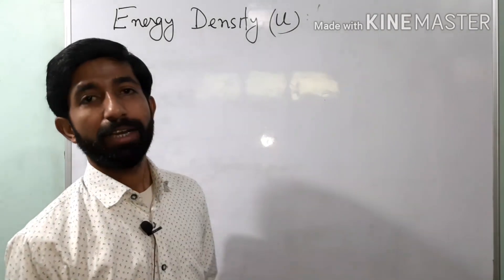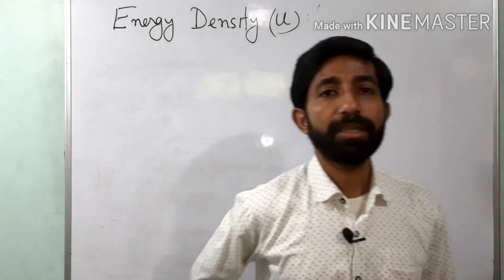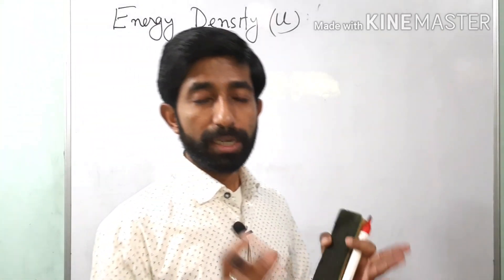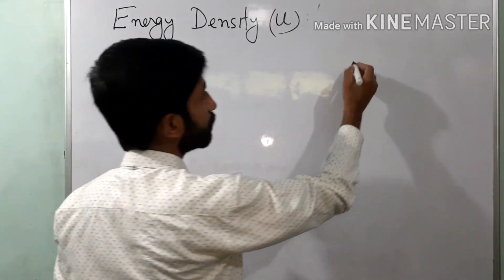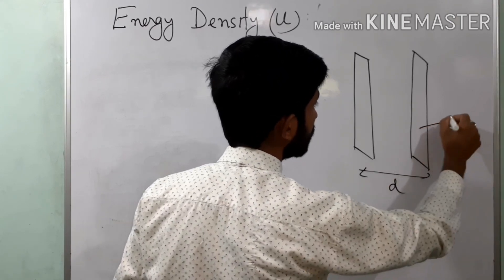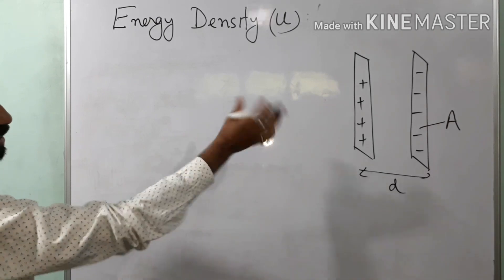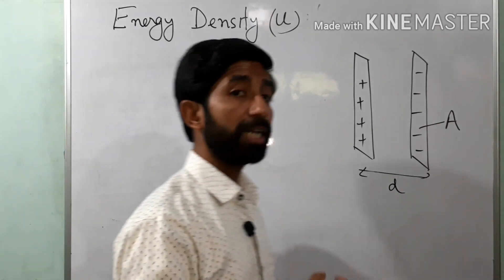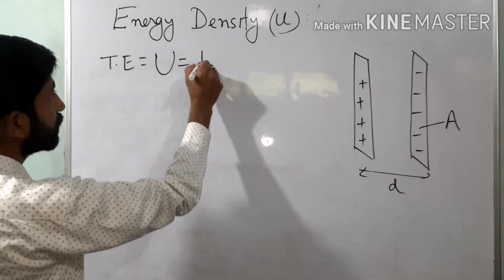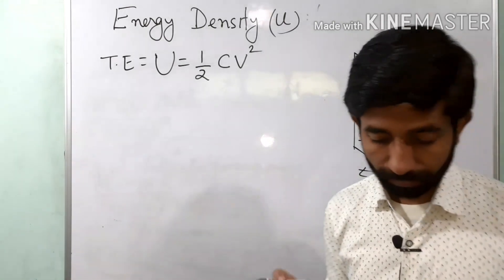We have one more small topic: energy density. In the last video we discussed the potential energy, or energy stored in a capacitor — a parallel plate capacitor. Taking that forward, we shall derive the energy density for any capacitor. This is our parallel plate capacitor at a separation of D having surface area A. This is positively charged, this is negatively charged. The total energy stored, given by the charger, is the potential energy U equal to half C V squared.